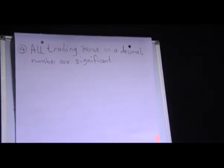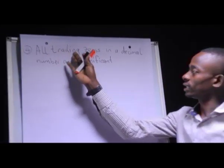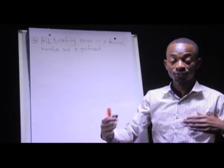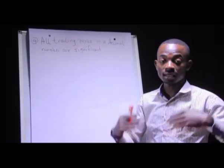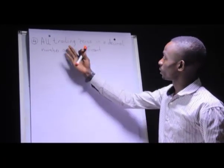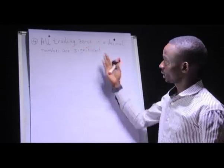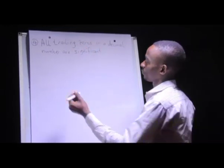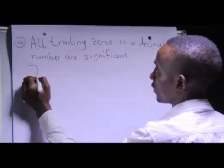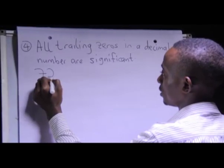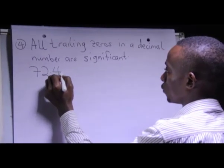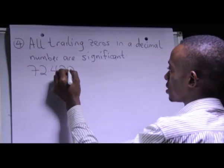What I mean by 'trailing' in this case: trailing means that something comes after another — that's what I mean when I talk about trailing. For example, we can have a number such as 72.420.